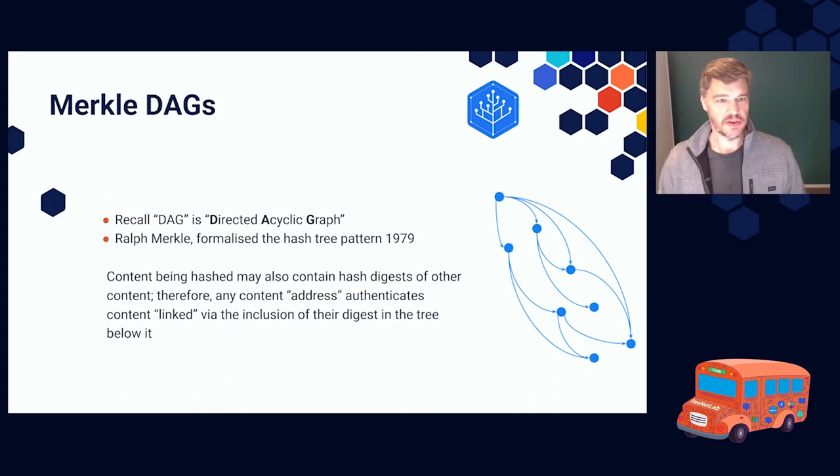Ralph Merkle, where the name Merkle comes from, he formalized this patent in 1979, and we've been building on this ever since, to the point where we're now building economic systems using blockchains and Merkle graphs. So the foundation you can think of as content that is being hashed may also contain hash digests of other content. So when you're hashing a bit of content, that hash, the content itself may include a hash of some other content. That's your graph building, where you are pointing to a different piece of content. And by doing that, the parent hash of the data that contains other hashes, you're actually authenticating the content that it's linked to. And you're including it in the tree.